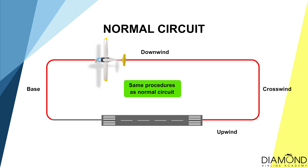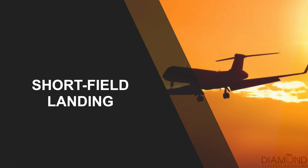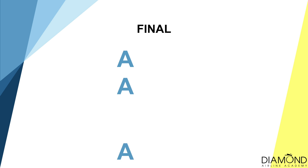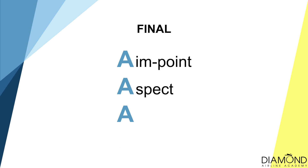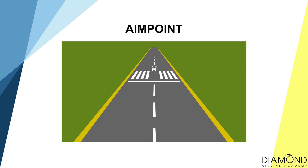The procedure is exactly the same as a normal circuit until the final leg, which would be the start of the short field landing technique. In the approach phase of a short field landing, the approach work cycle — aim point, aspect, airspeed — would still have to be done. However, there are some adjustments for this particular approach. Aim point will no longer be the second centre line, but the start of the runway, so we can maximise the entire length of the runway to reduce the risk of runway overrun.